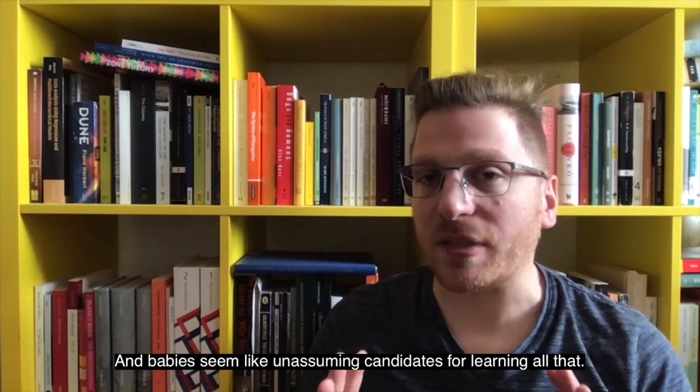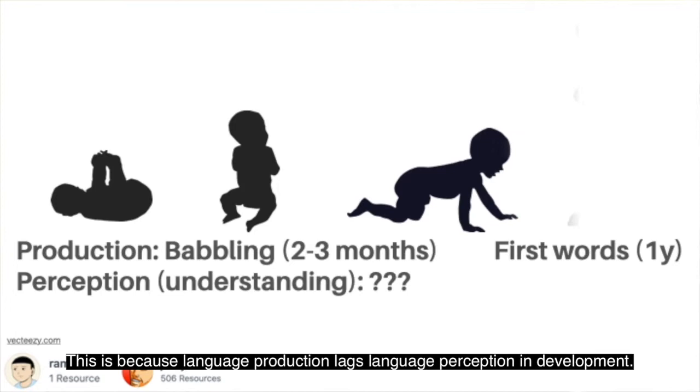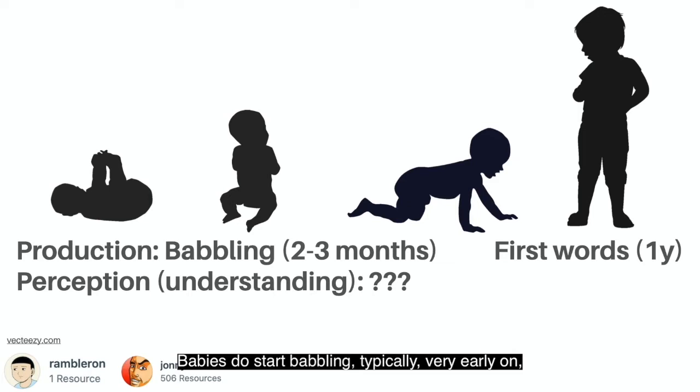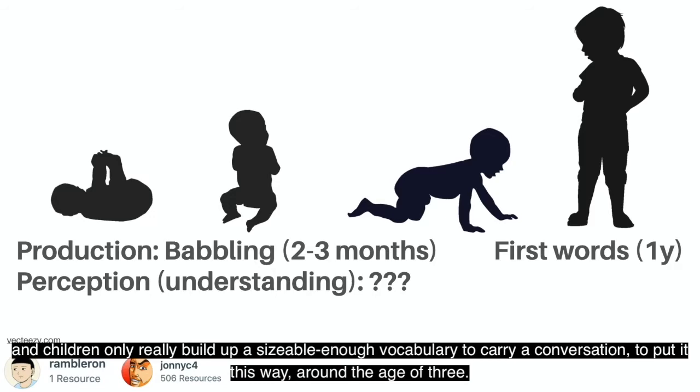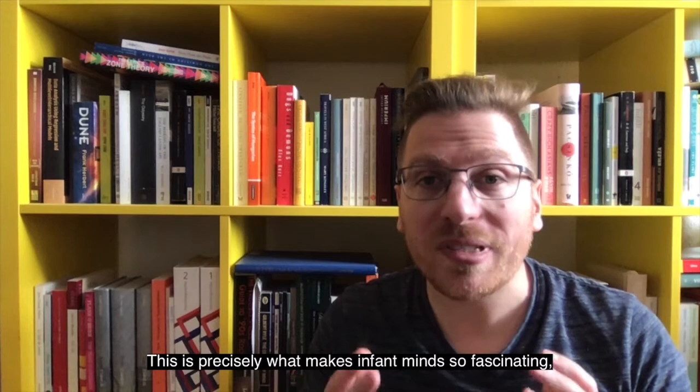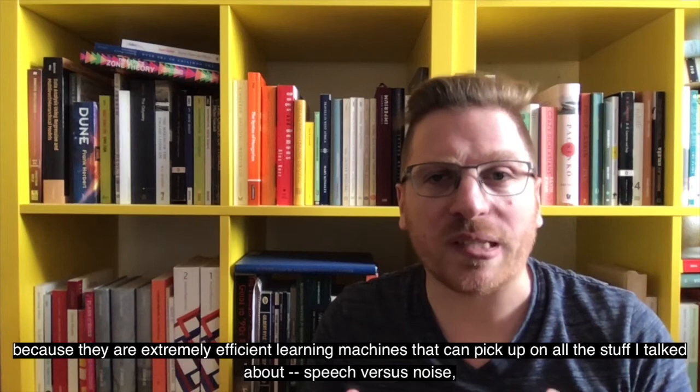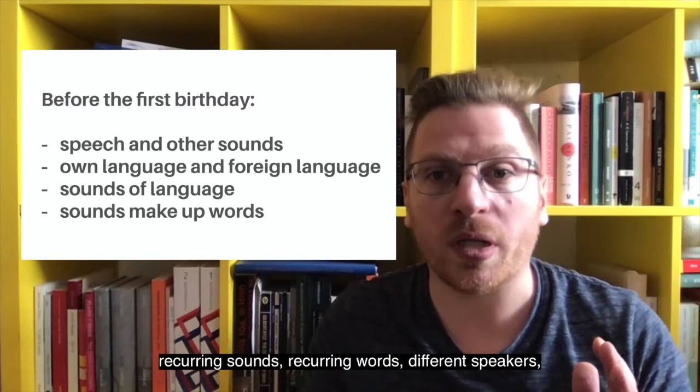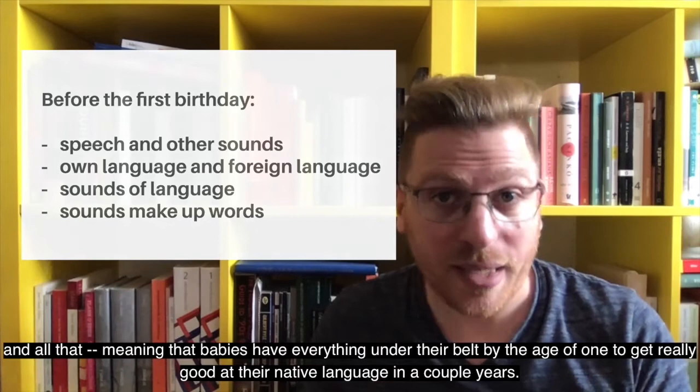This is because language production lags language perception in development. So babies do start babbling typically very early on, but the first recognizable words only show up around the age of one, and children only really build up a sizable enough vocabulary to carry a conversation around the age of three. And this is precisely what makes infant minds so fascinating, because they are extremely efficient learning machines that can pick up on all the stuff I talked about—speech versus noise, recurring sounds, recurring words, different speakers—and all that meaning, that babies have everything under their belt by the age of one to get really good at their native language in a couple years.